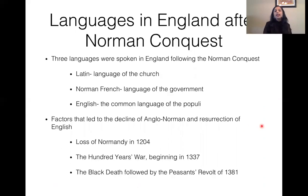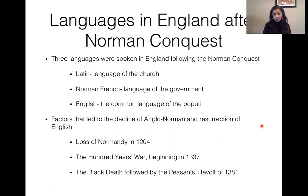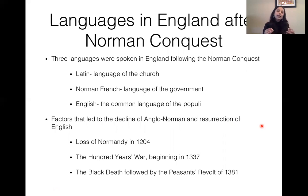What were the languages in England after the Norman Conquest? There were three languages spoken: Latin, which was the language of the church; Norman French, which was the language of the government; and English, which was the common language of the people.